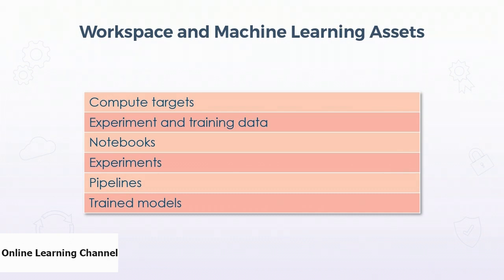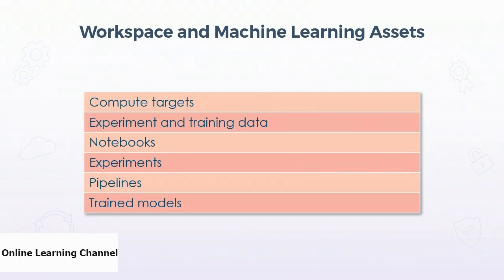Experiments are used to capture model training runs. An experiment can have many runs, and each experiment includes lots of detail about the effectiveness of the model contained within it. Then there's the pipeline asset — this is a visual representation of a model training exercise. With pipelines you can drag and drop modules to create a workflow of how you want your model to be trained.